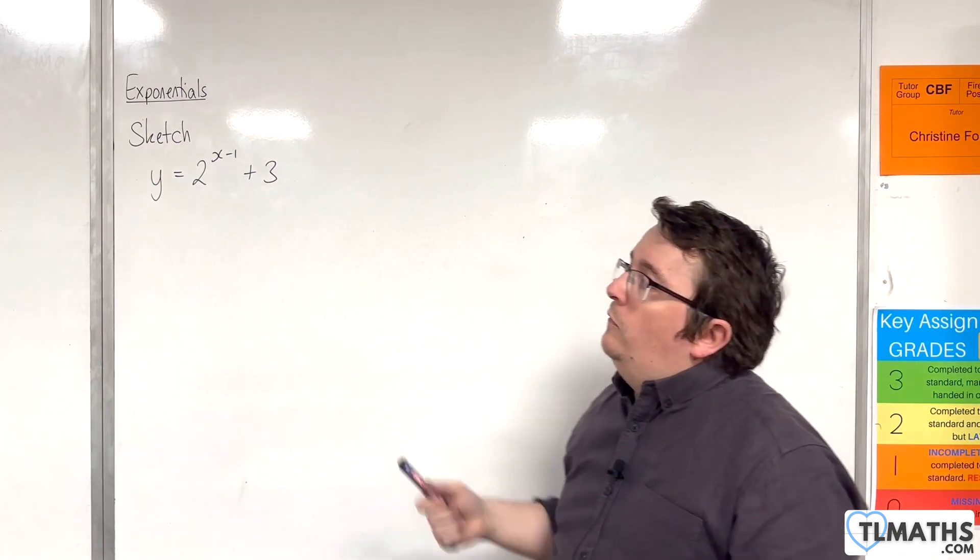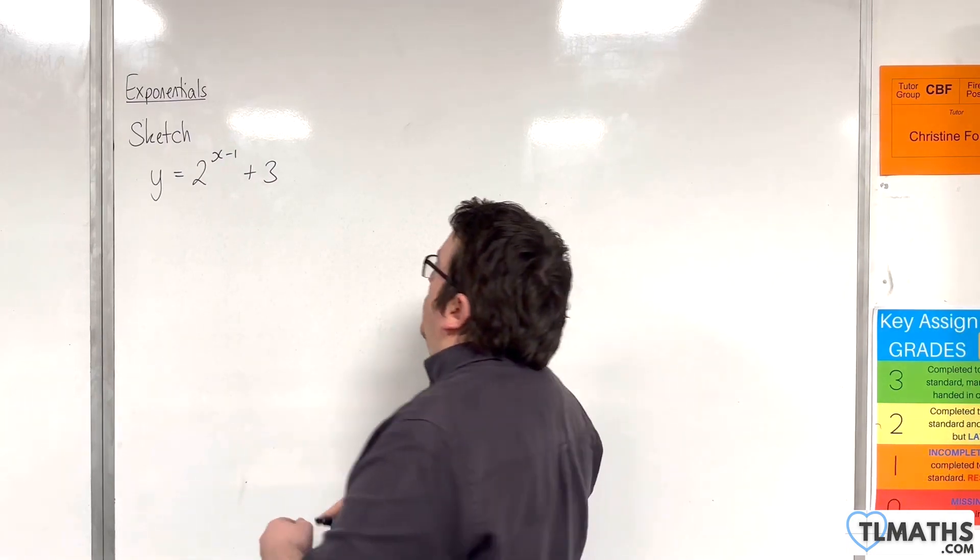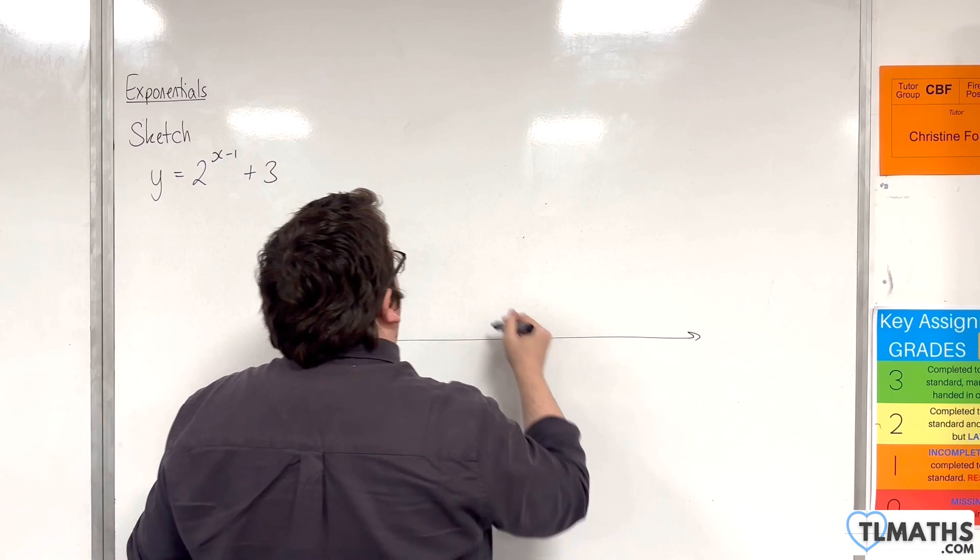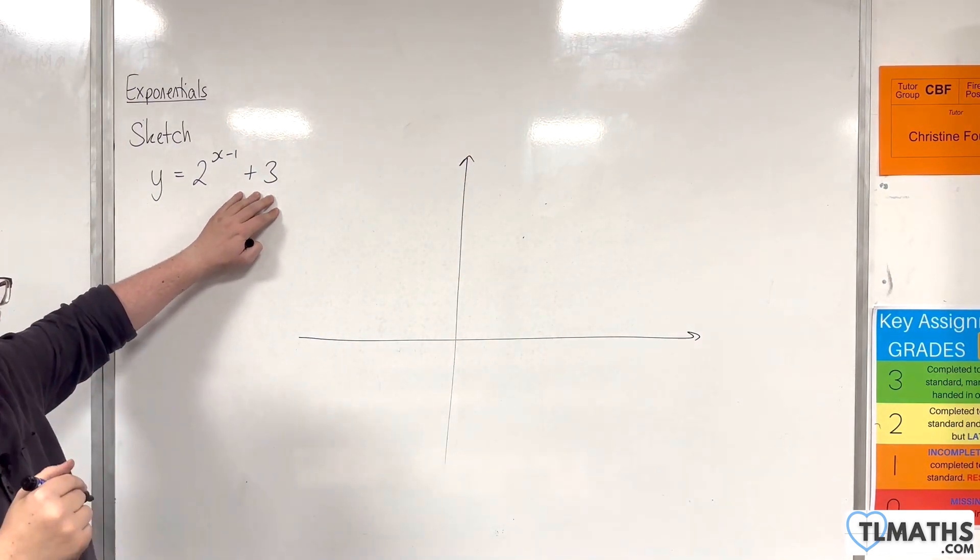So in this example, we're going to have y equals 2 to the x minus 1 plus 3. The first thing you want to do is identify where the horizontal asymptote will be, which is when y is equal to 3.